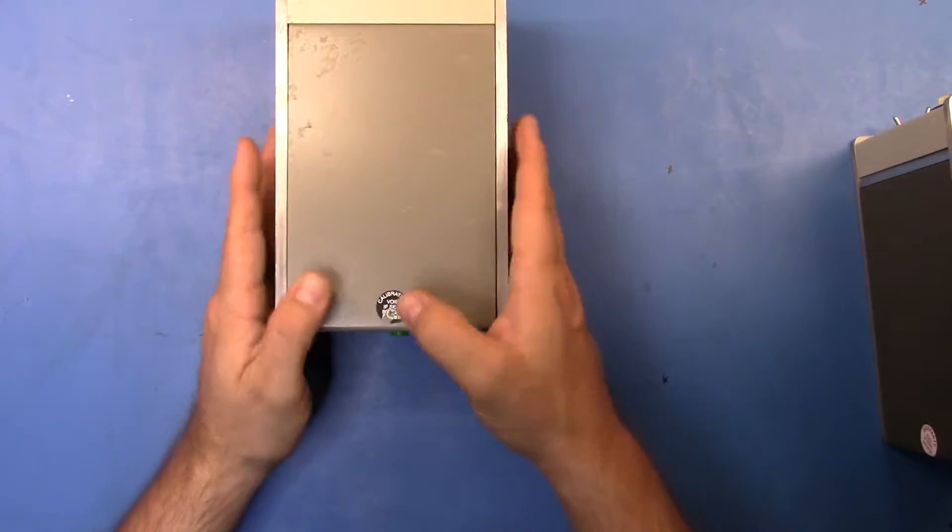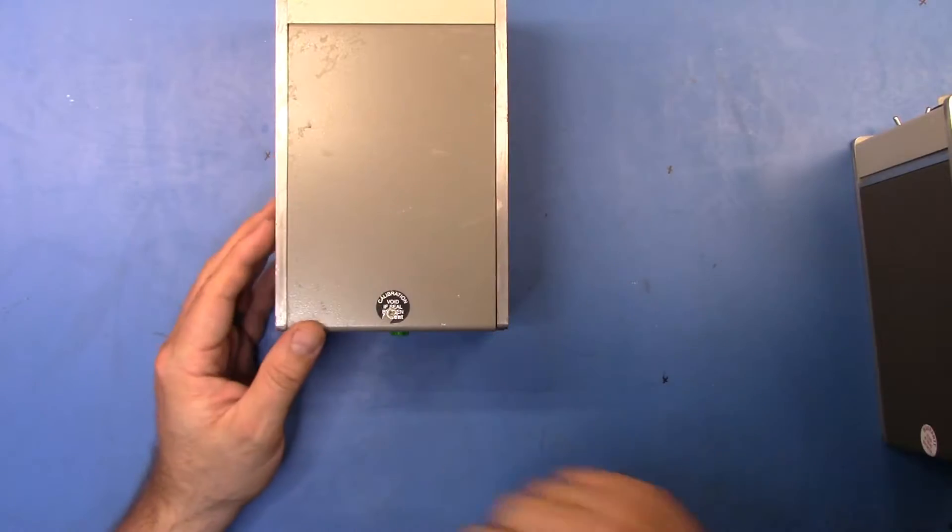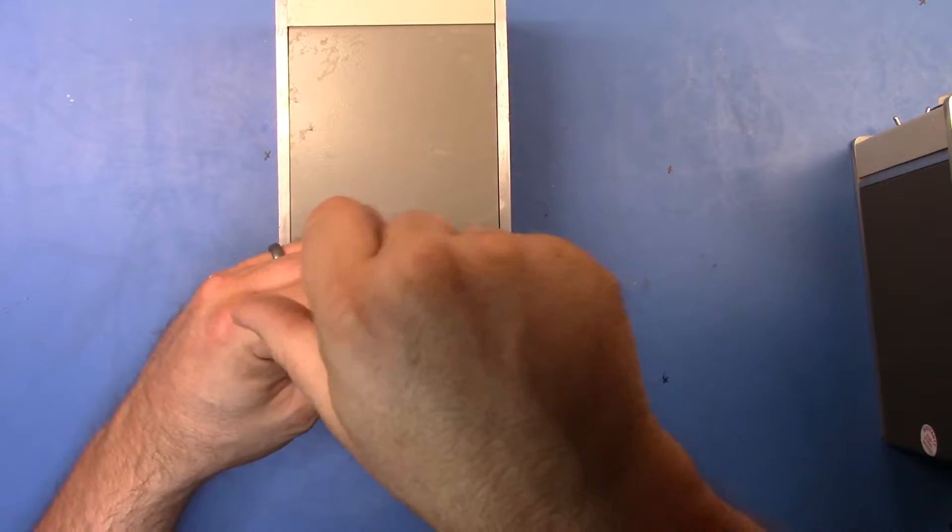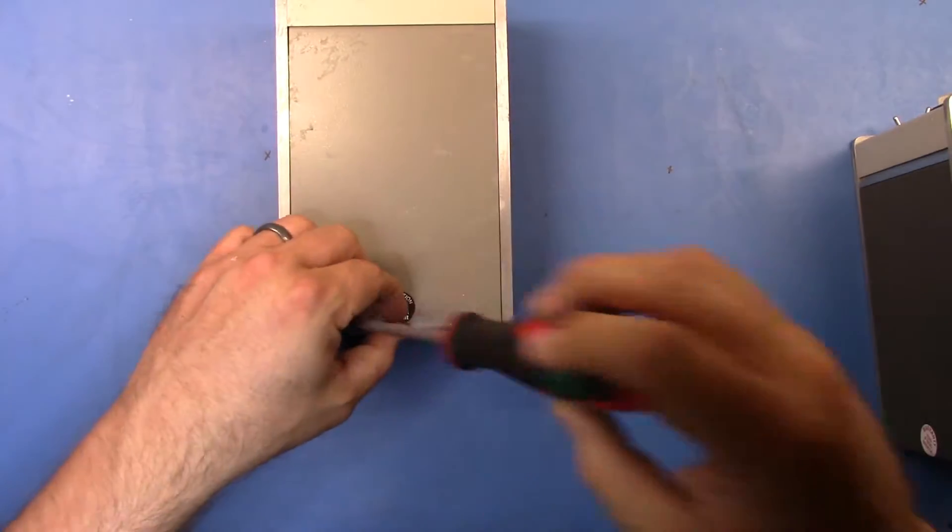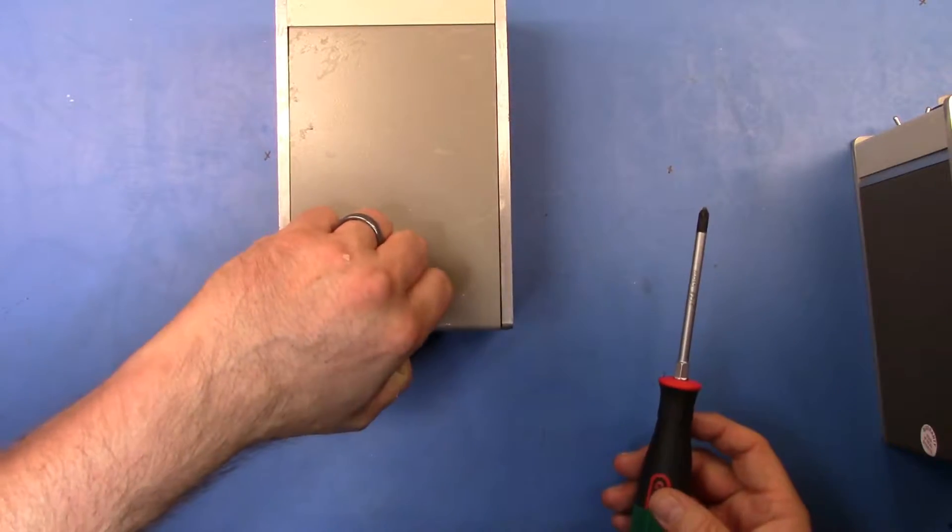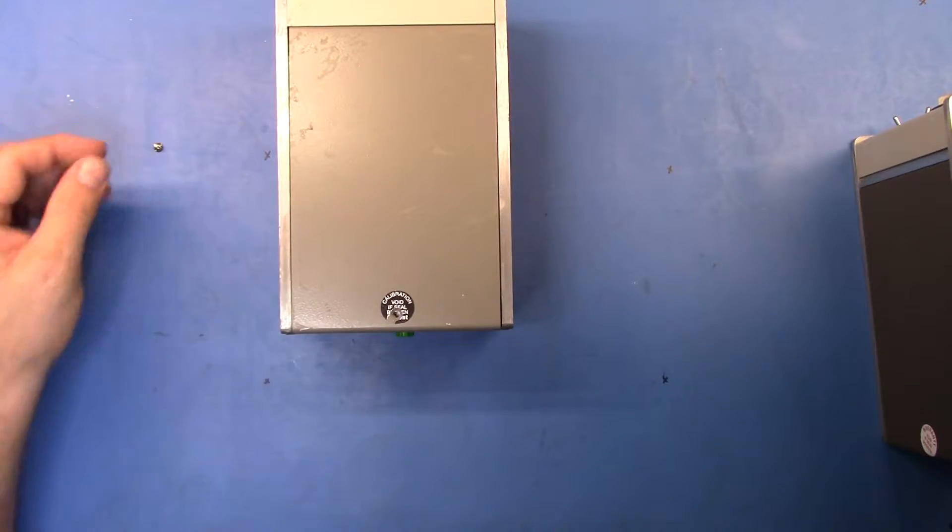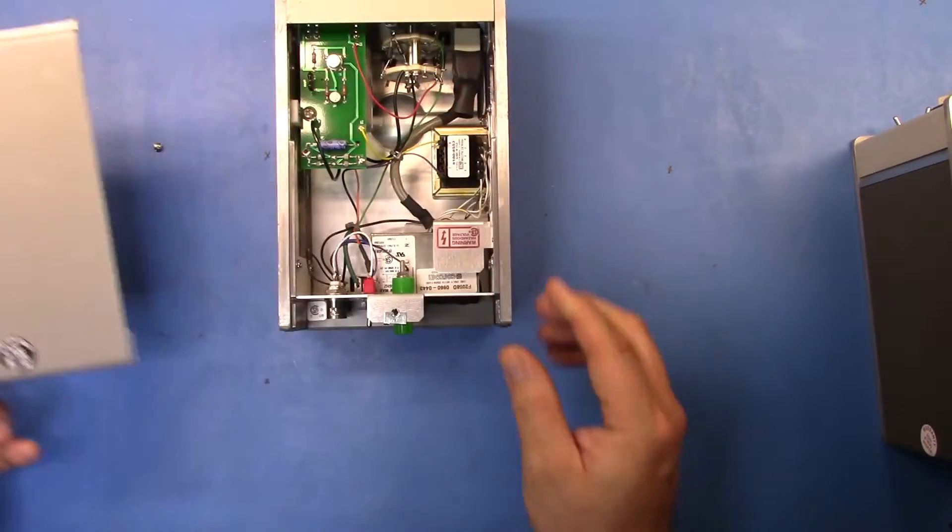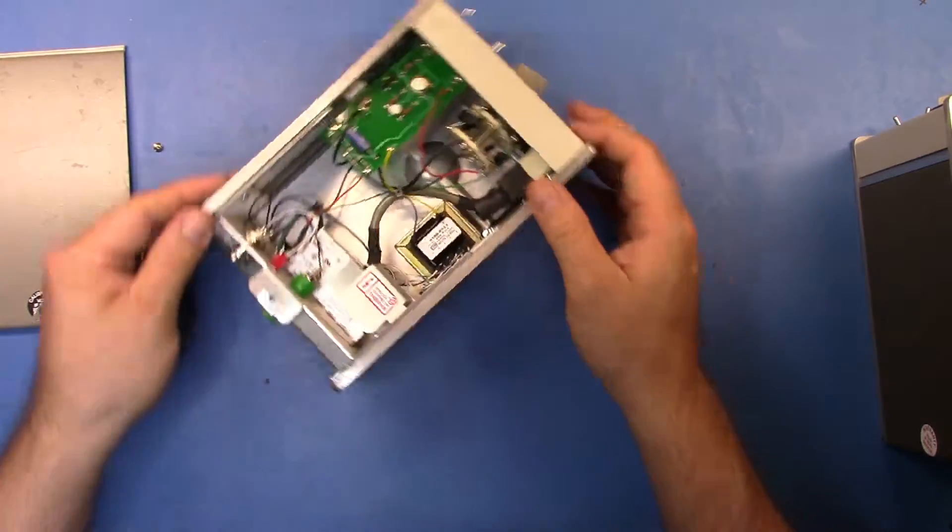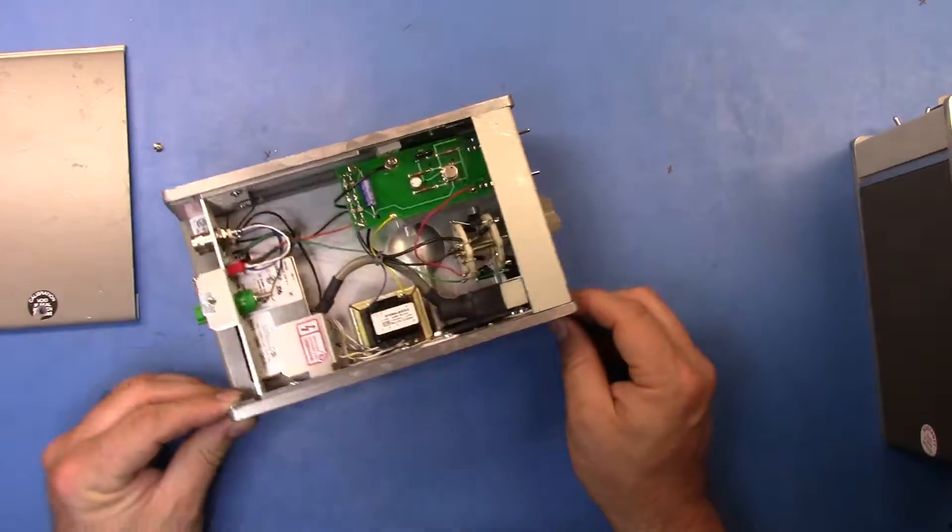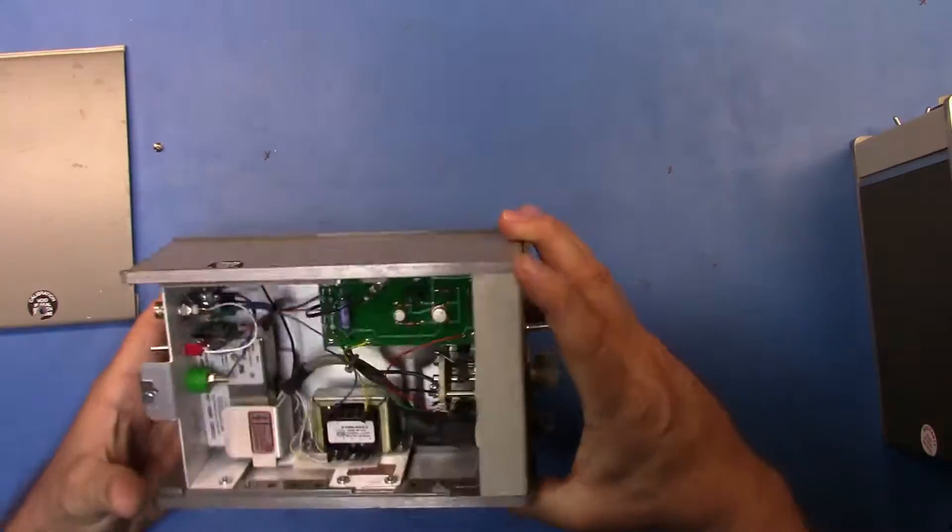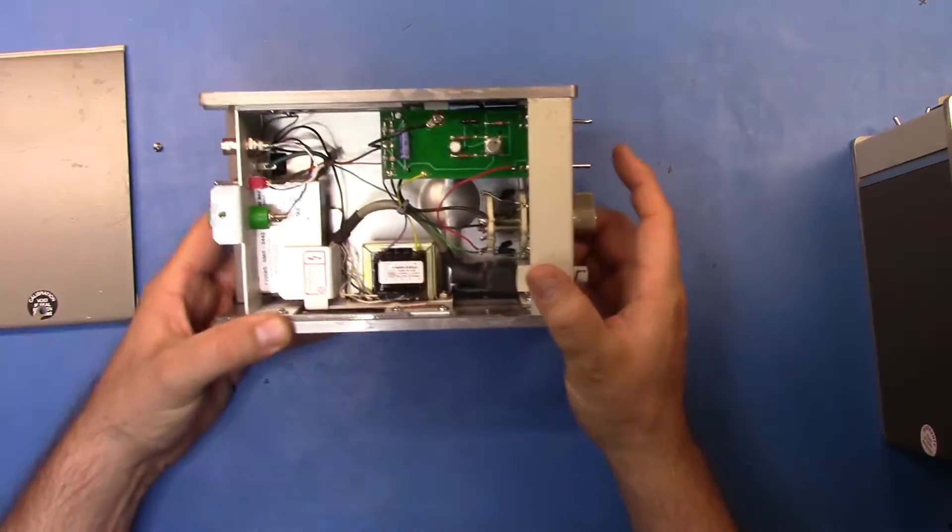But this guy, even though the calibration seals are still there, this one actually came off when I was pulling off that top. I think, you know, I have no idea when it was calibrated and I'm going to take a look at it anyway. So let's take the top off and see what's inside.